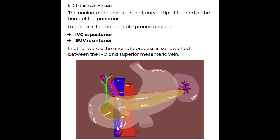In our image here, we can see the IVC. We have the uncinate process just anterior to it, and then just anterior to the uncinate process — the top of the sandwich — is the SMV here as it connects back to the portal confluence.